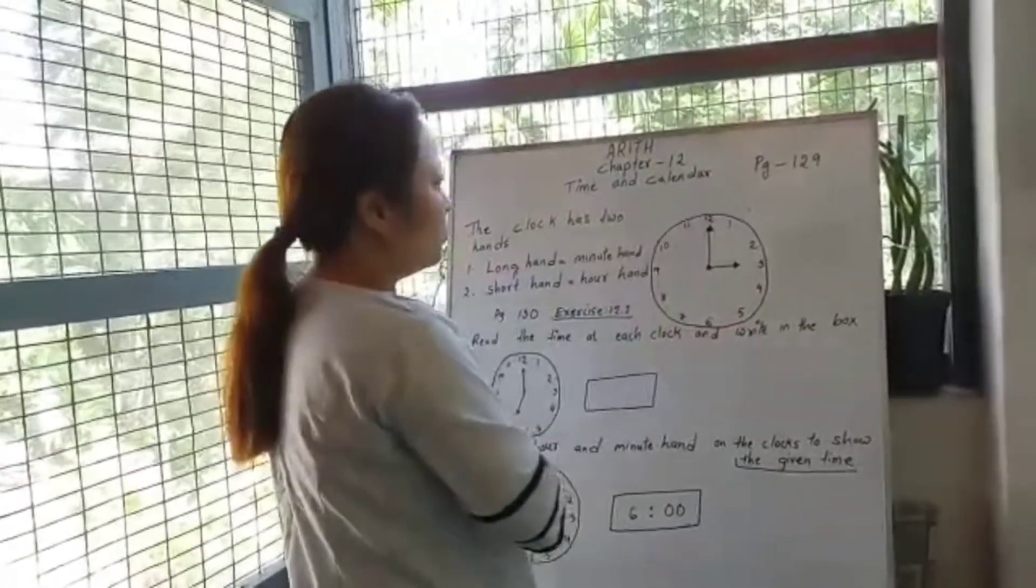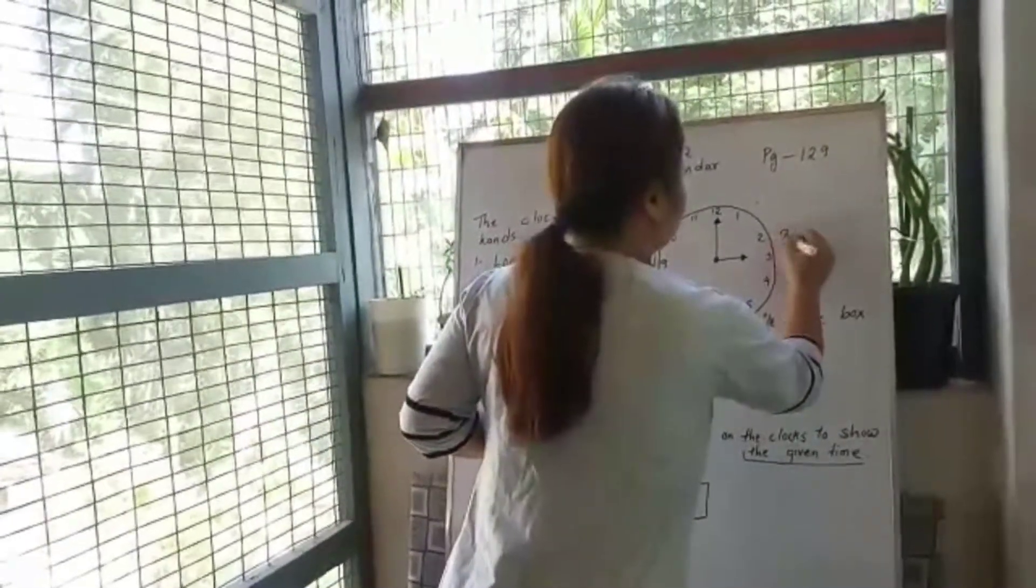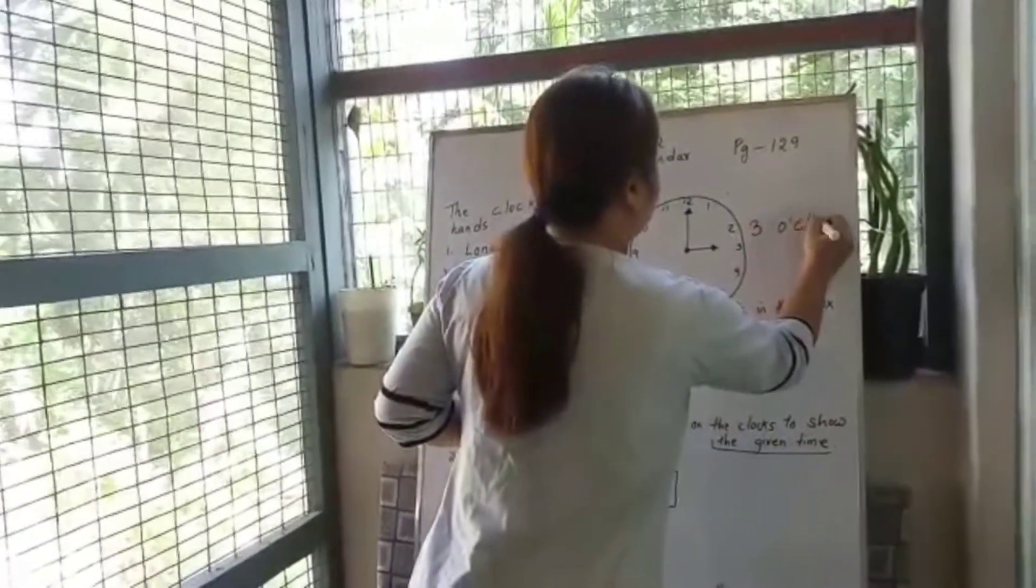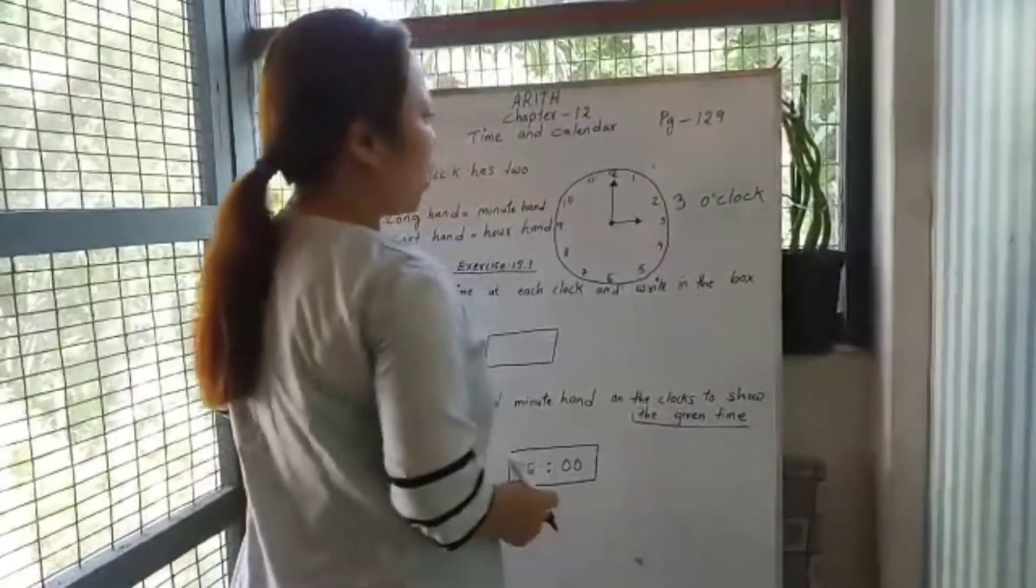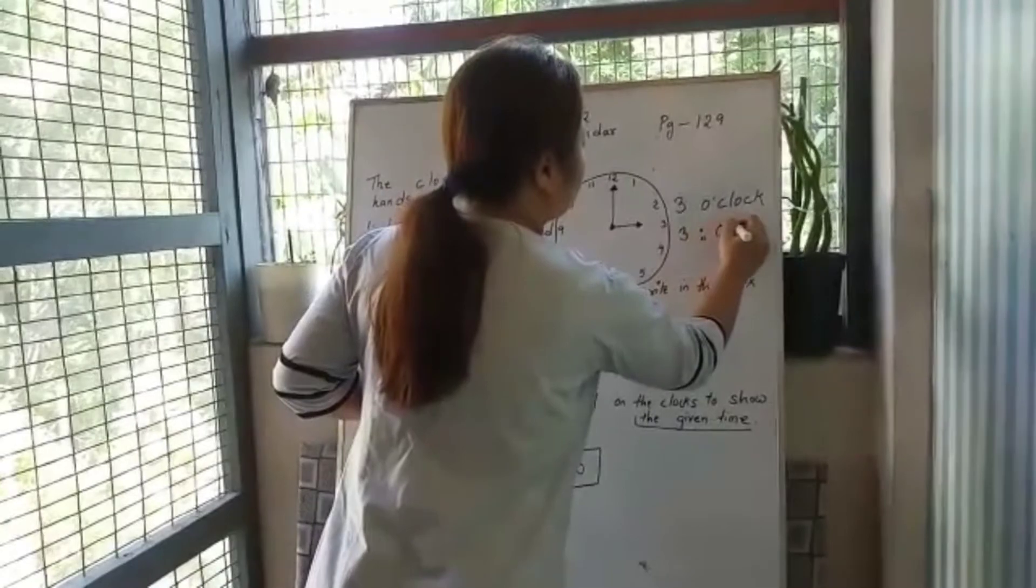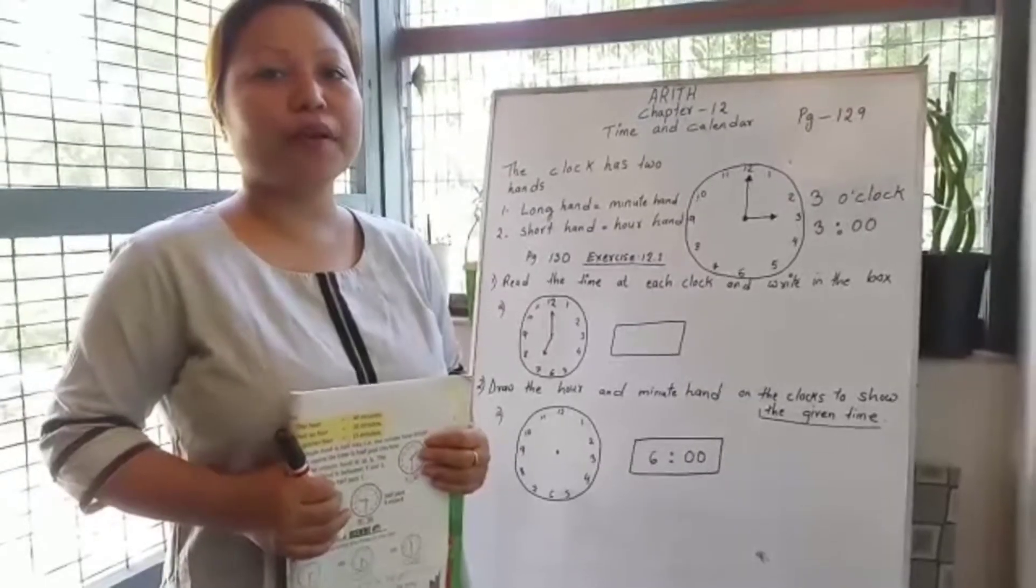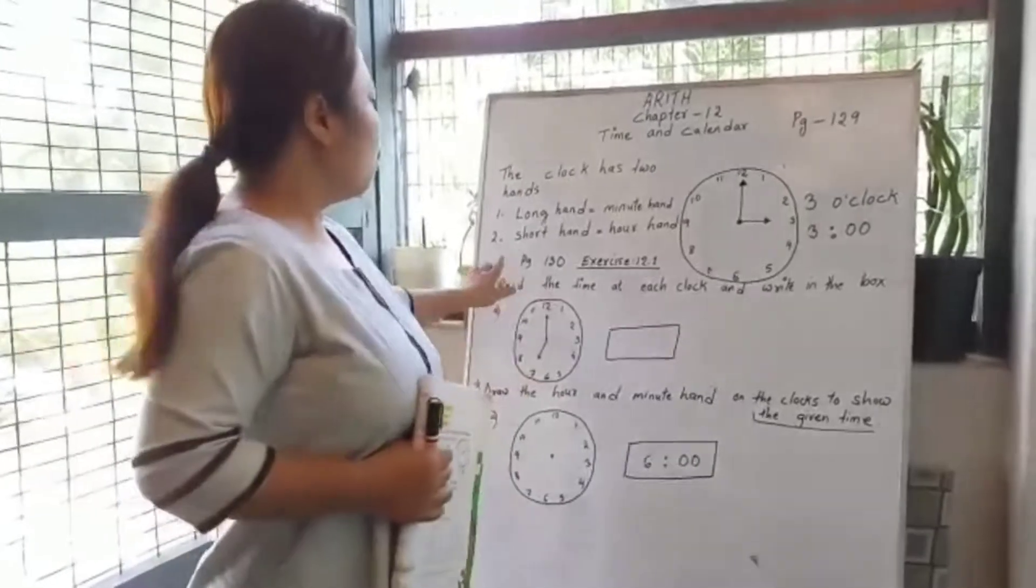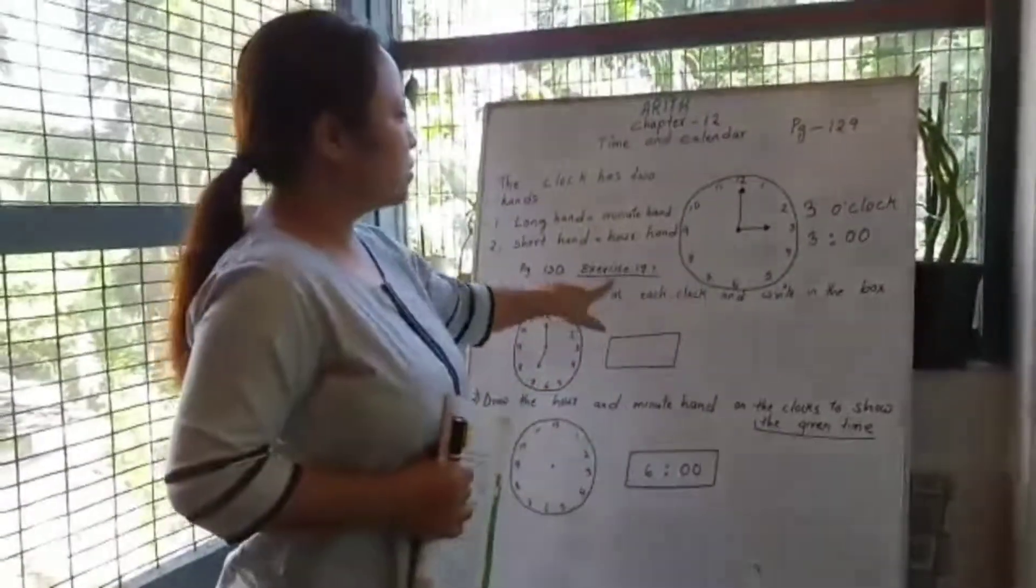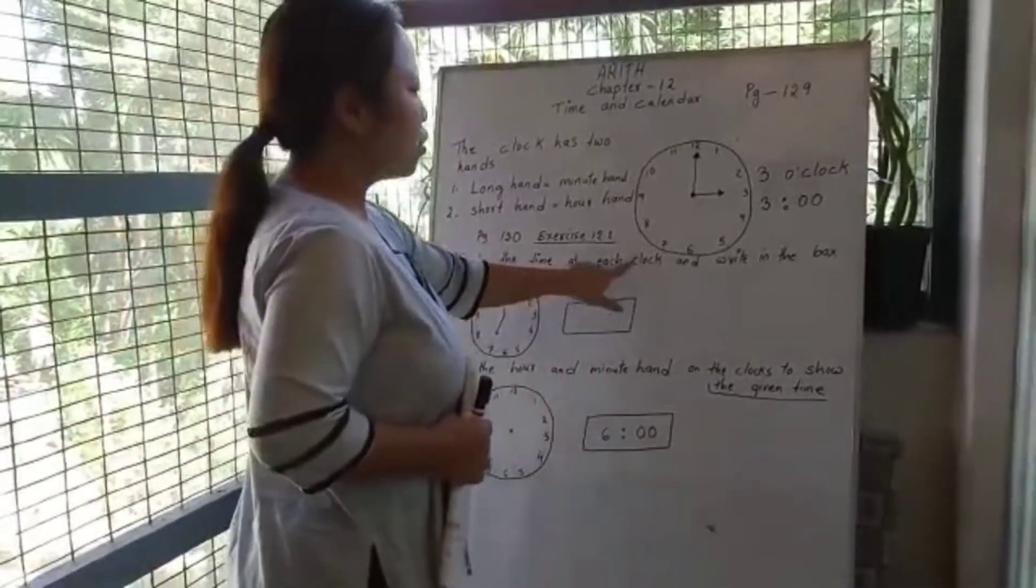That means the time is 3 o'clock. In the same way, we can write the time as 3 like this. Children, open your book and turn to page 130, exercise 12.1. Read the time on each clock and write in the box.